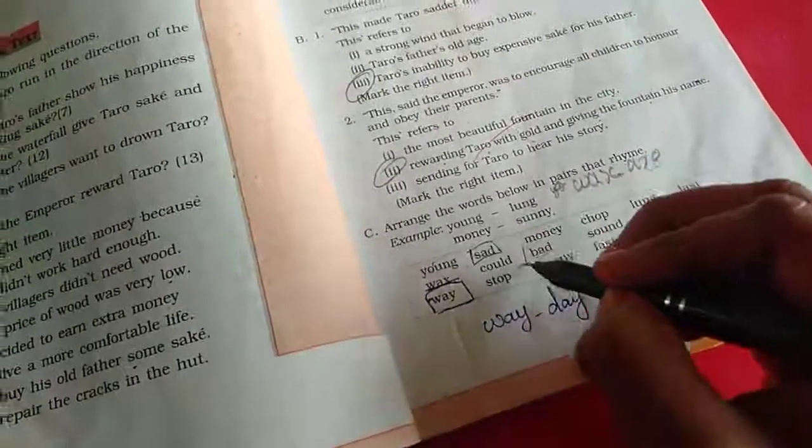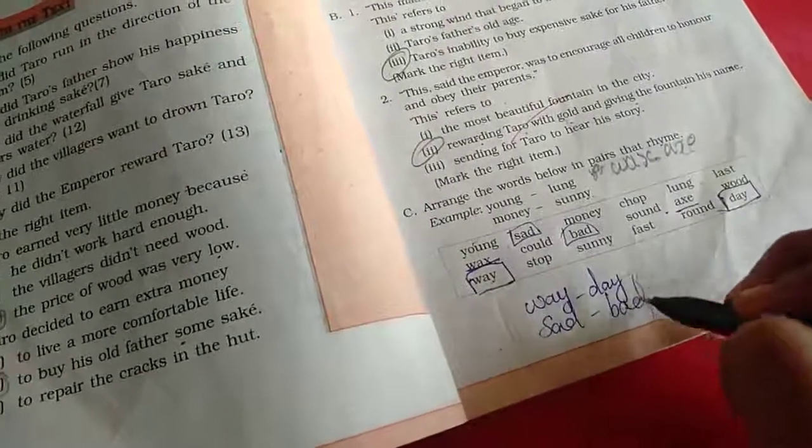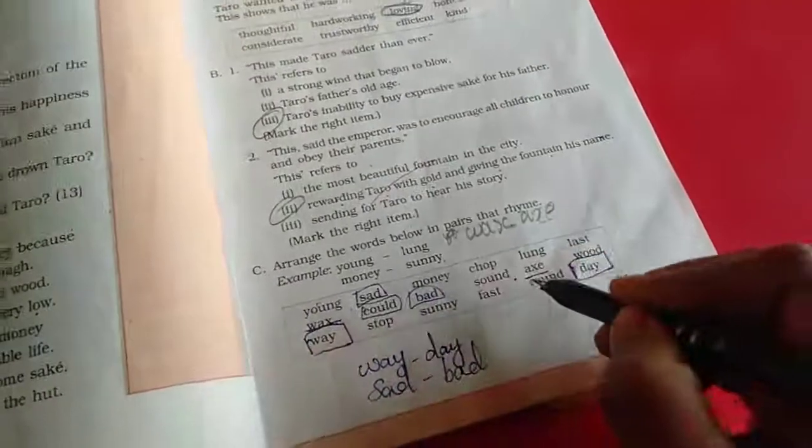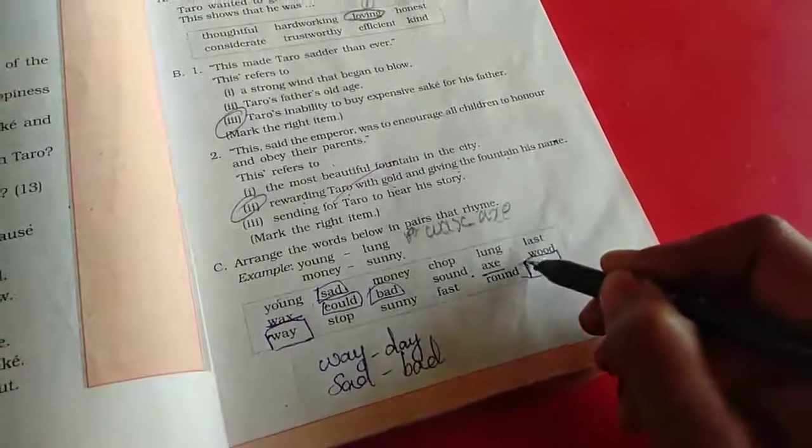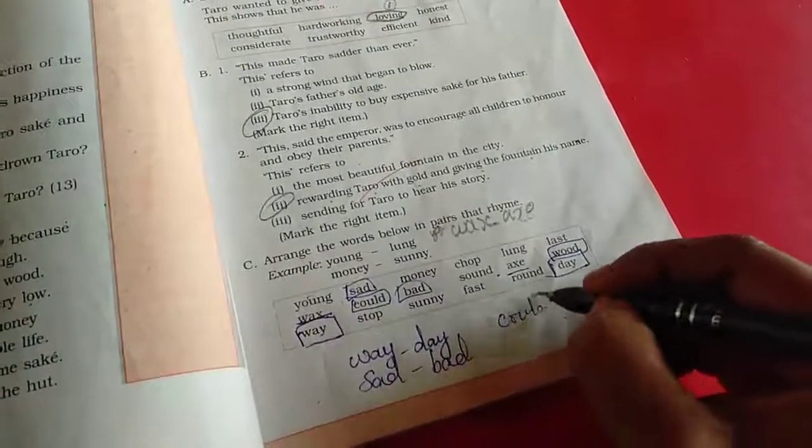Then, Sad, Bad. Second one is Sad, Bad. Then, Could. For the good, which one is correct? Would. Could, Would.